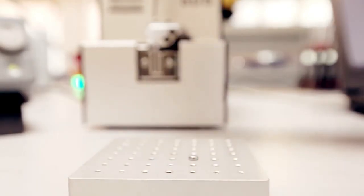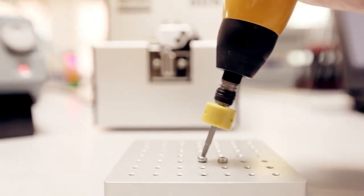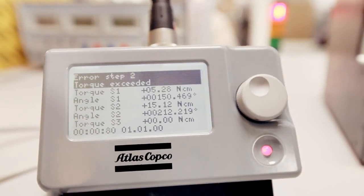A misaligned screw, a so-called cross thread, is detected by the fact that the tightening will reach final torque before the joint is tightened correctly. Torque is exceeded and the angle is too low.